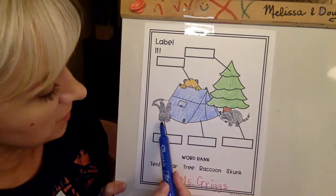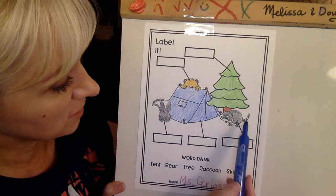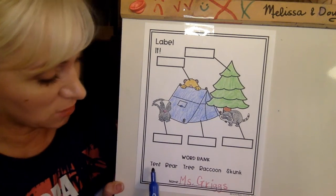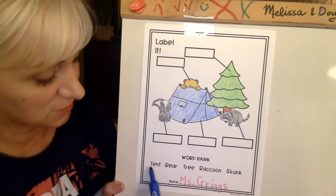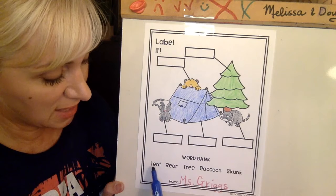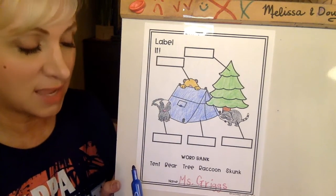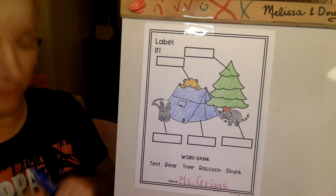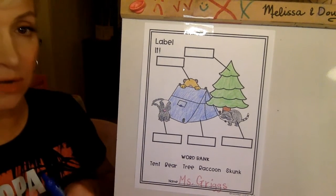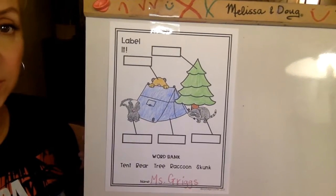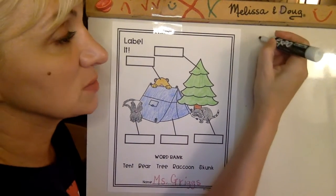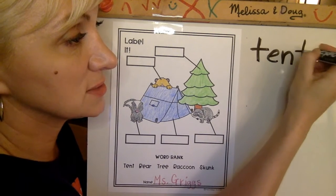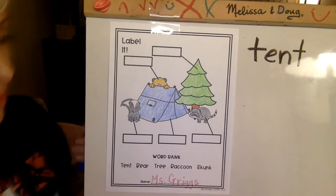So let's take a good little look at our picture. We've got some animals and some other items. Let's look at our words. I see my first word — tent. I'm going to write that up here so that we see our word bank. So tent is our first one, and I'll write it bigger so that we can see it.